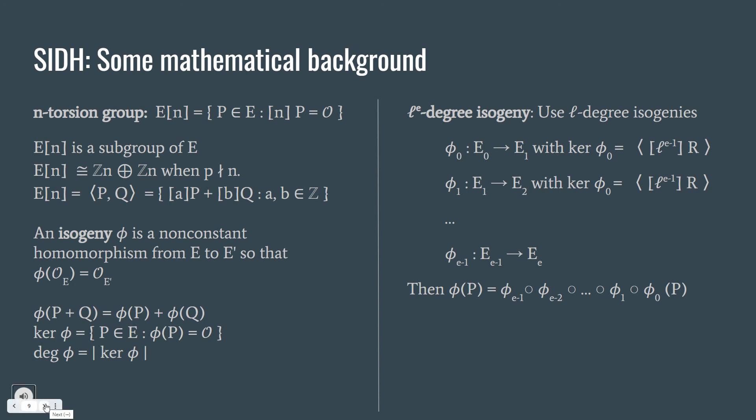N-torsion group is actually the set of points such that n times P equals the point of infinity. It's a subgroup of E and it's actually isomorphic to Zn plus Zn if p doesn't divide n. Therefore, we can find two points P and Q generating this torsion group.